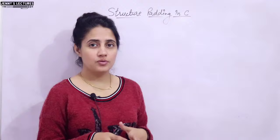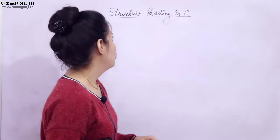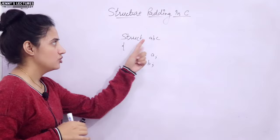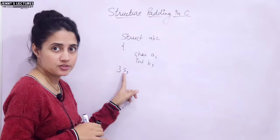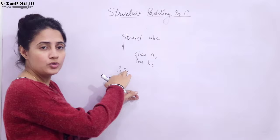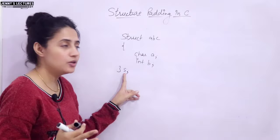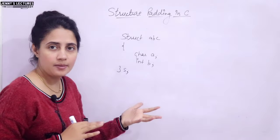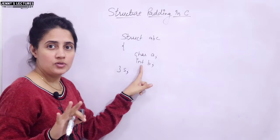Let's see what structure padding is in C with a simple example. I'm defining a structure ABC with only two members: char a and int b, and declaring a variable s. If you ask how much memory would be allocated, simply you might say one byte for char and four bytes for int — one plus four equals five bytes. But that is wrong.